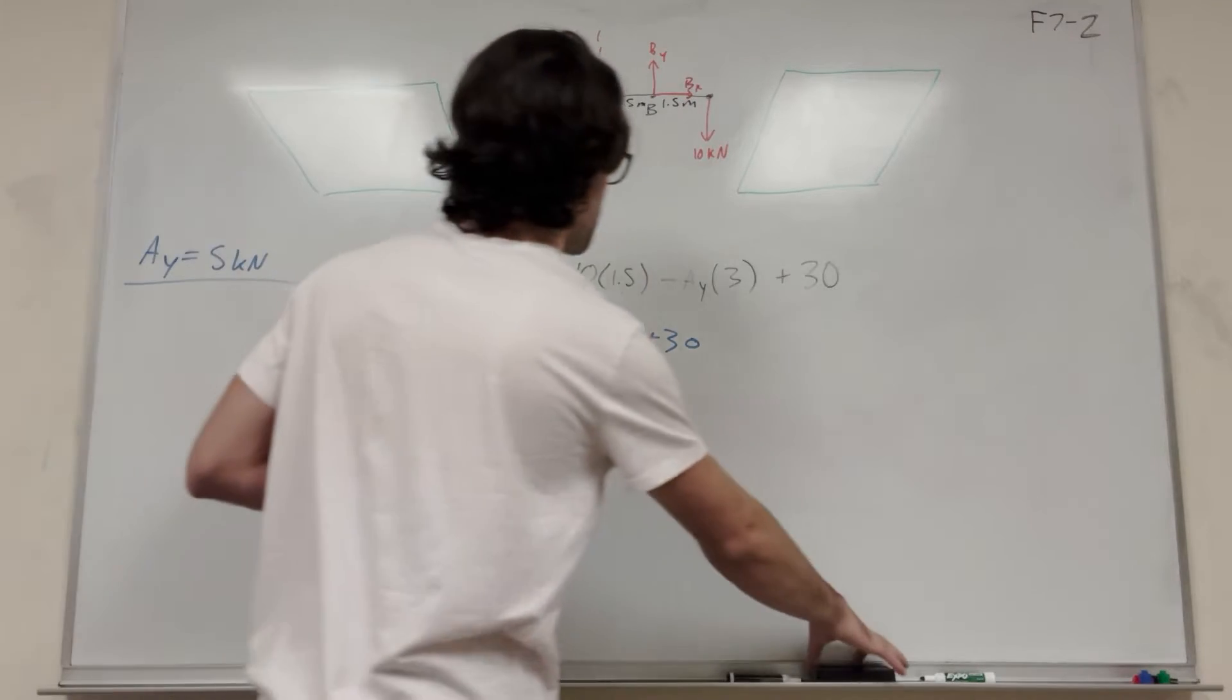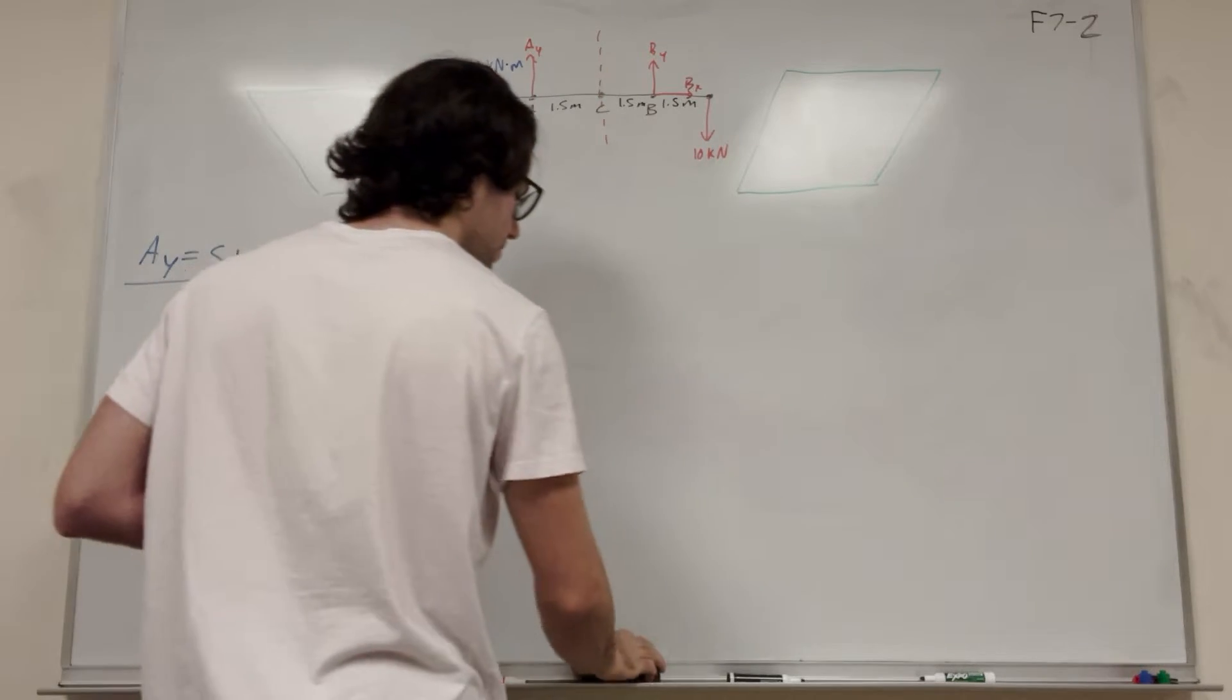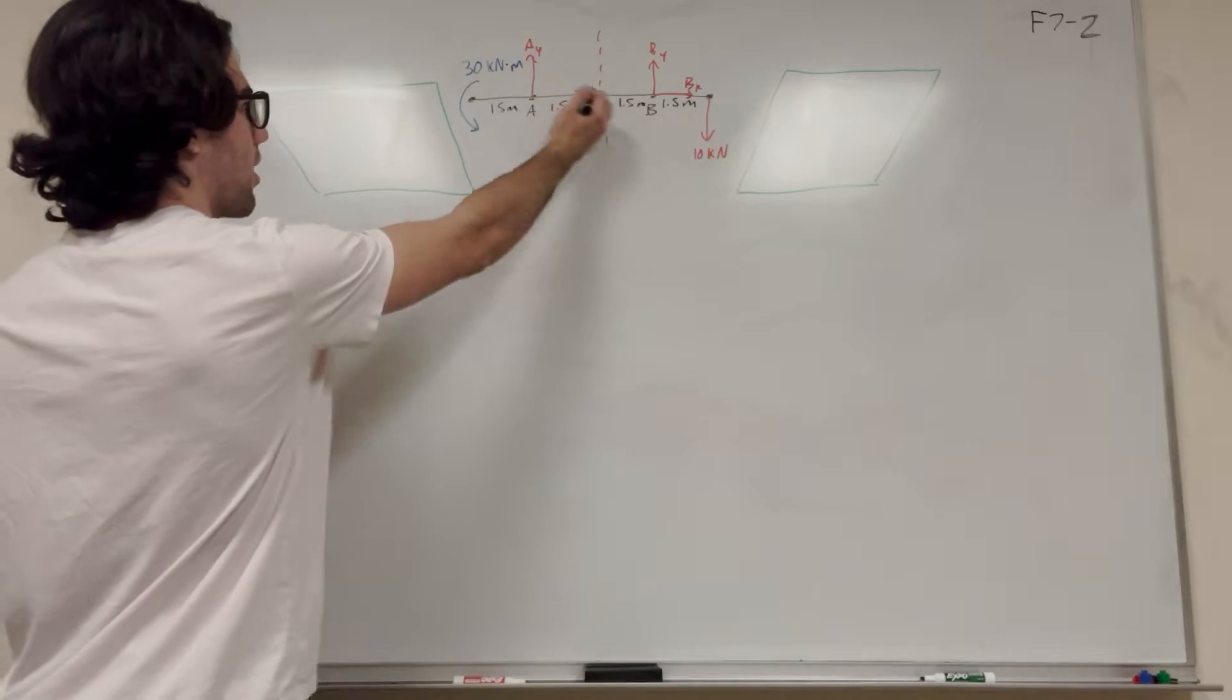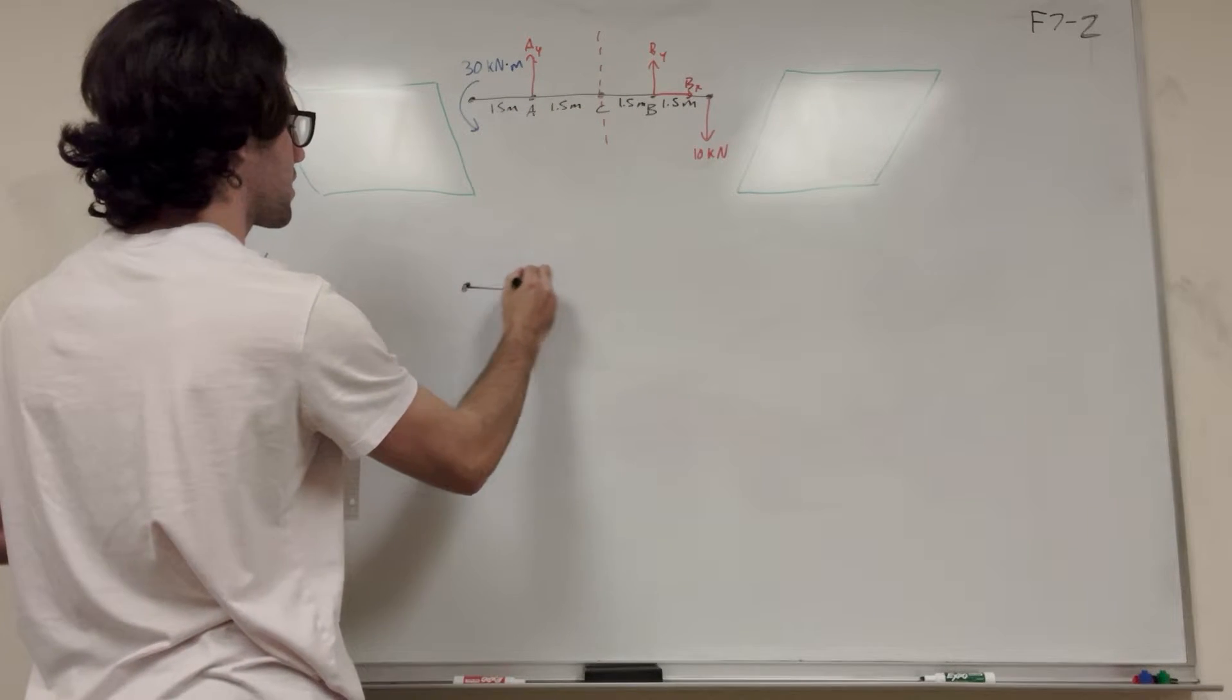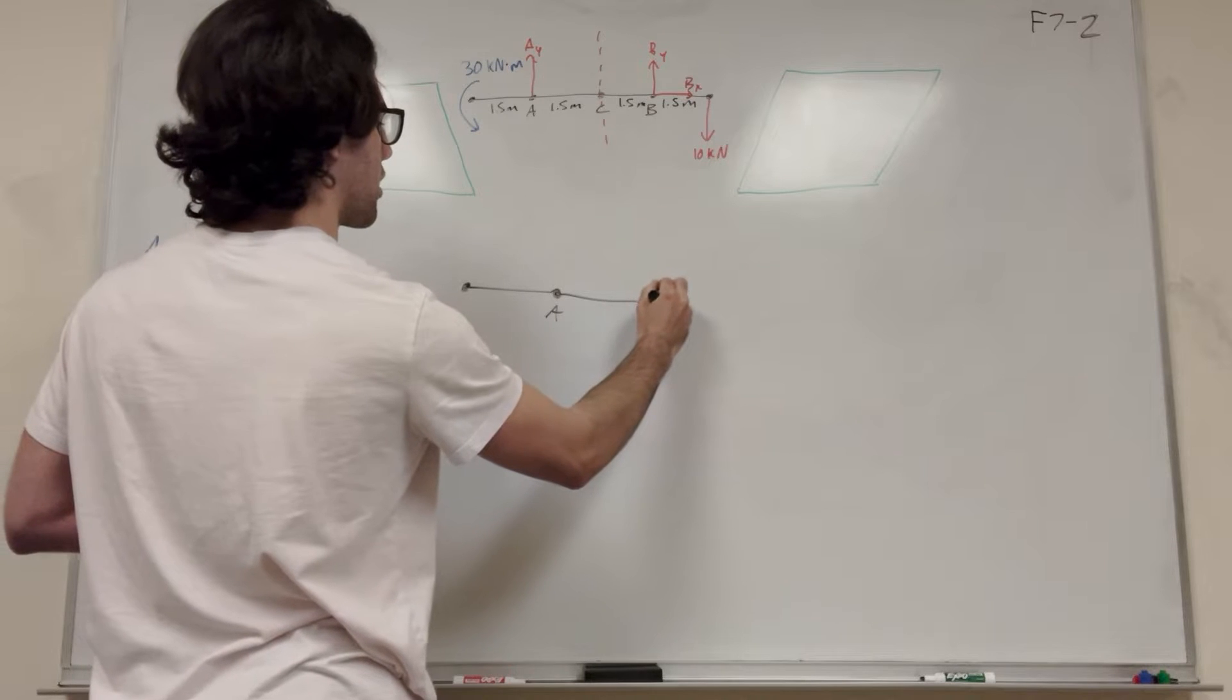So let's make our cut and make a new free body diagram. So I'm making a new free body diagram. It's just going to be the left side. It's going to be the cut at C. So this is going to be our left. Here's A. And then here's C.